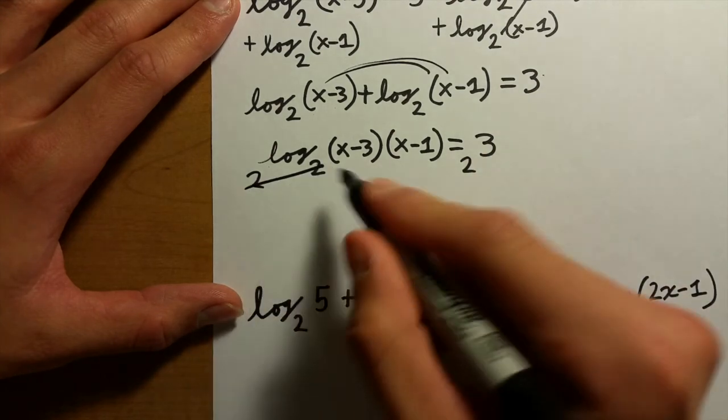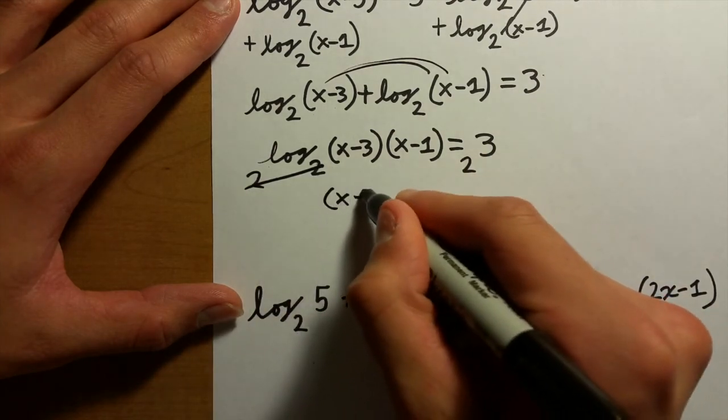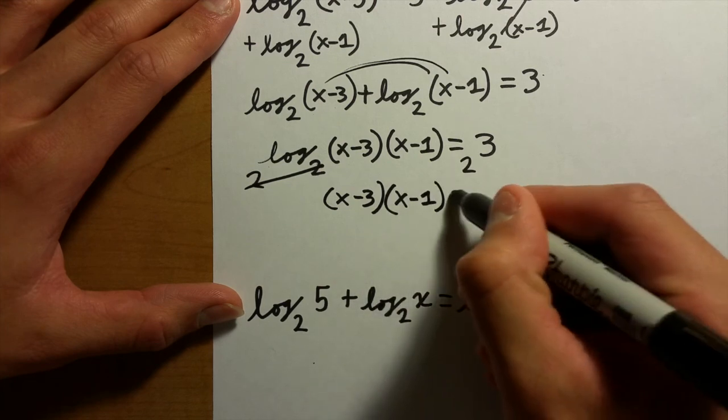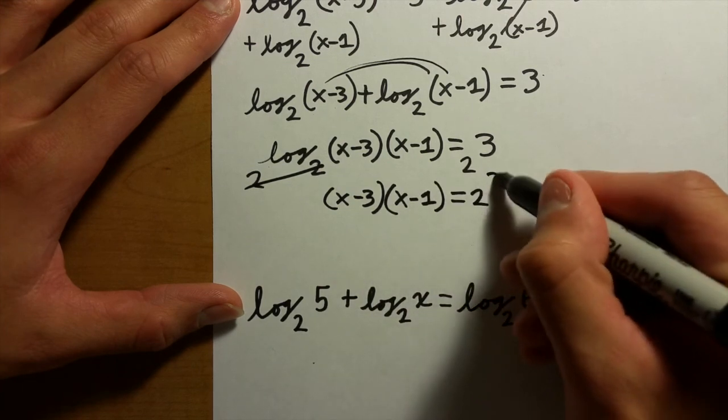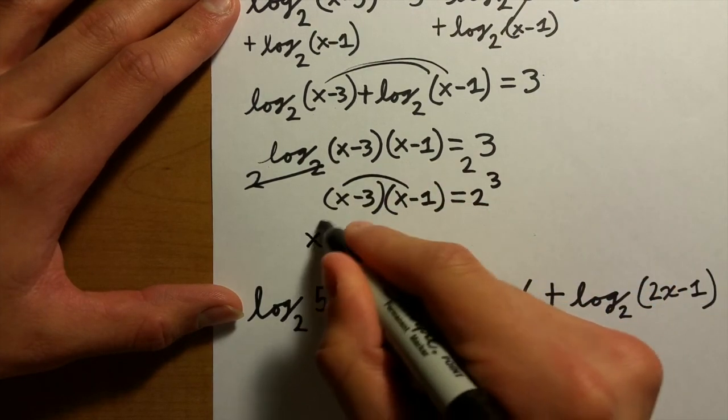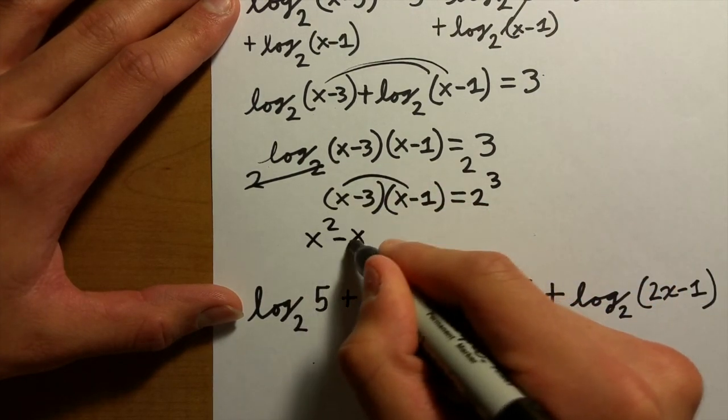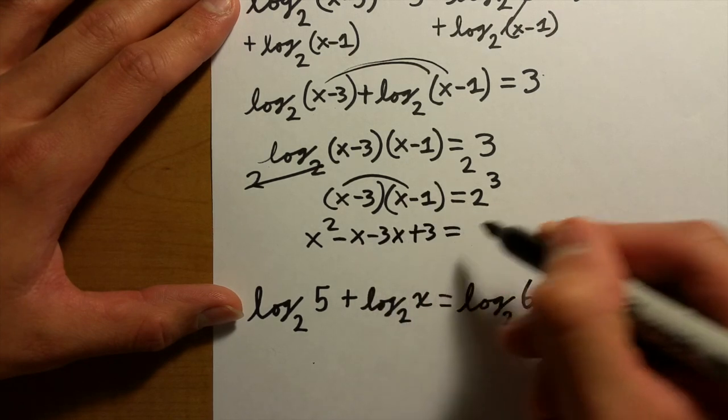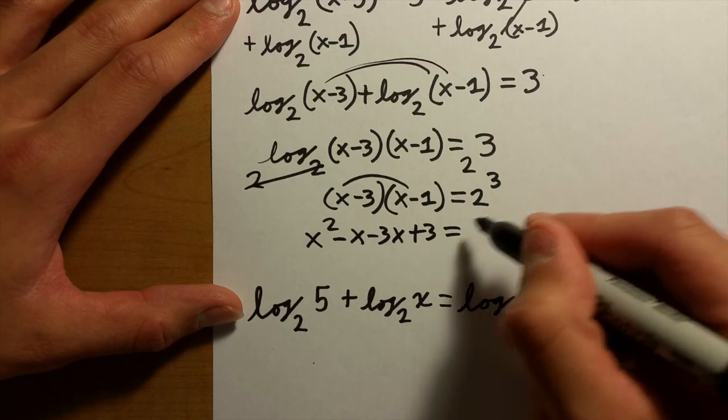So these cancel out and you're left with (x-3)(x-1) = 2³. If you factor that out it's going to be x² - x - 2x + 3 = 8. Wait, x² - x - 2 = 8.